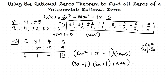When we set this all equal to 0 — which we do for finding zeros of a polynomial — we start with the first factor and get x equals 1 third. For the second factor, we get x equals negative 1 half. And for the third factor, we see that x equals negative 5.